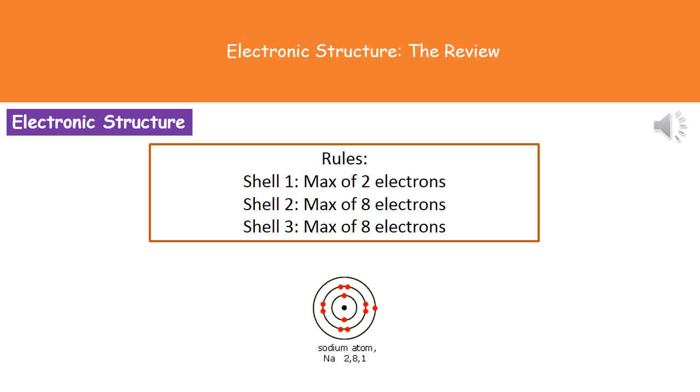We represent electrons as a cross, but a dot will also be accepted on your exam as long as it's nice and clear. The key thing is to have clear markings for your electrons: maximum of two on the innermost shell, maximum eight on the second, and maximum eight on the third shell.